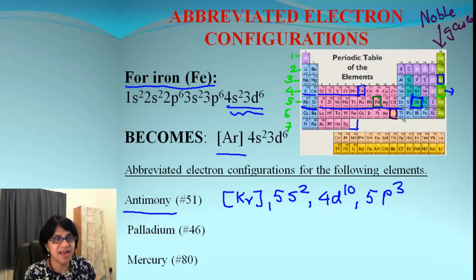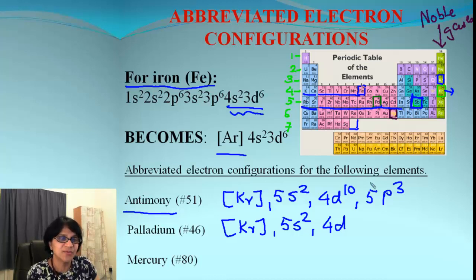Next one is palladium and palladium is right here. This is the element palladium. It is the row number fifth again but it's in D block. So we are going to begin same like antimony the last noble gas which we find in row number fourth which is krypton. Then we come back to the fifth row. S block. It's all done and then we come to 4D and look where is palladium. If you count that it's 1, 2, 3, 4, 5, 6, 7, 8. So we end up getting 4D8 for palladium.